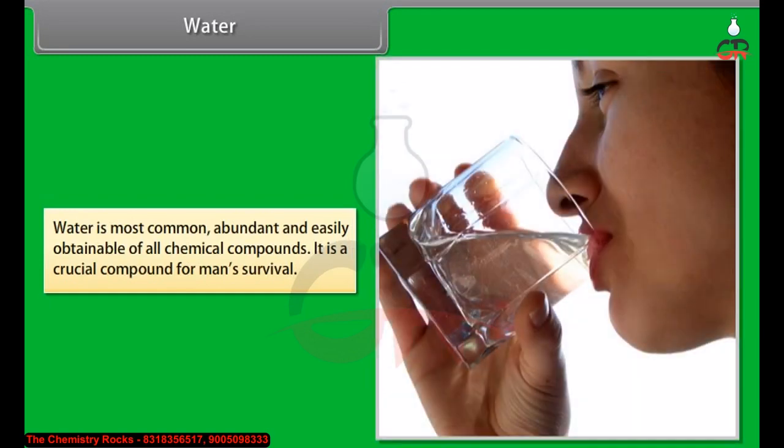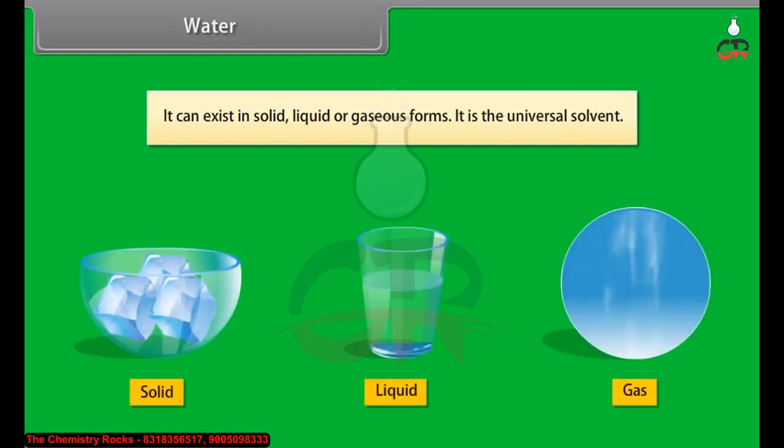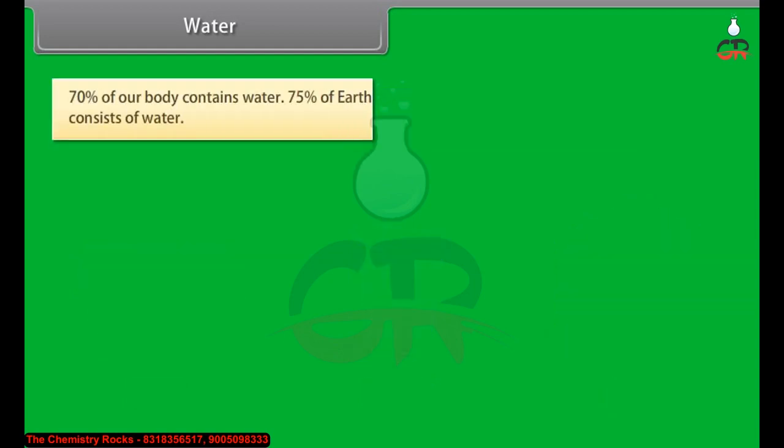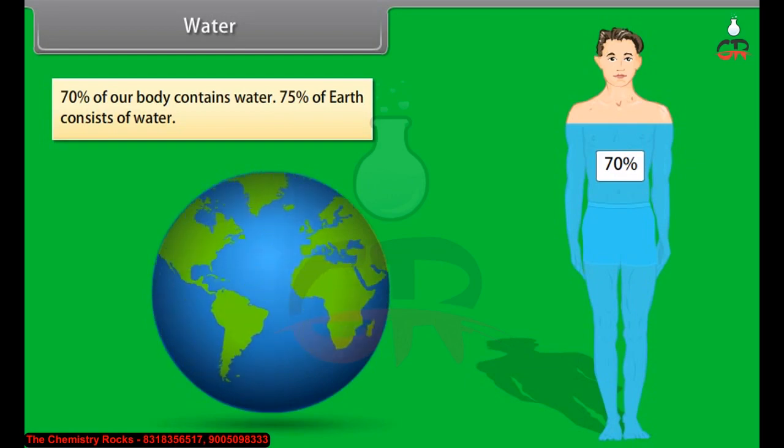Water is the most common, abundant, and easily obtainable of all chemical compounds. It is a crucial compound for man's survival. It can exist in solid, liquid, or gaseous forms. It is the universal solvent. 70% of our body contains water and 75% of Earth consists of water.